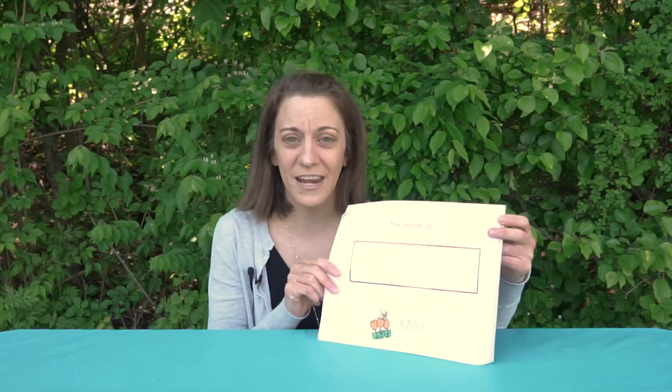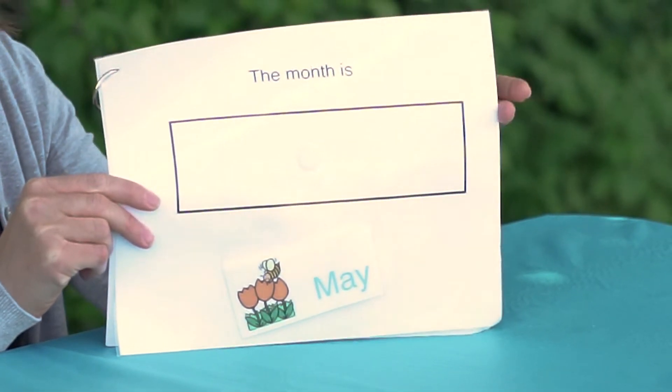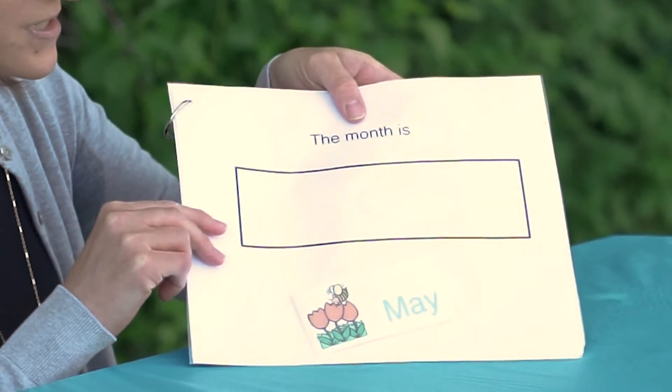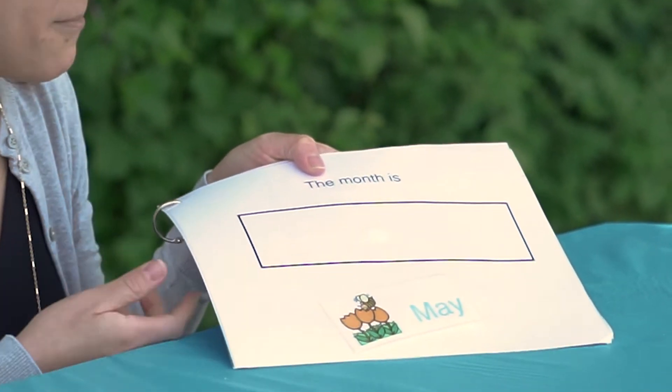At the start of the day, I start the students off with calendar time. We talk about the day, the week, the month, the year, and the weather. My students have a difficult time engaging or paying attention during group time, so I have each student sit with a little chart that covers what we go over in the morning each day — a mini calendar of what I'm presenting. They can sit at their desk and do the activity along with me.